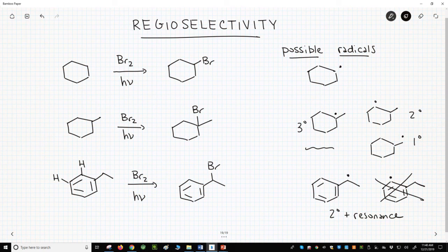So the radical brominations of alkanes are regioselective, and the regioselectivity of the reaction is determined by the stability of the radical intermediate.